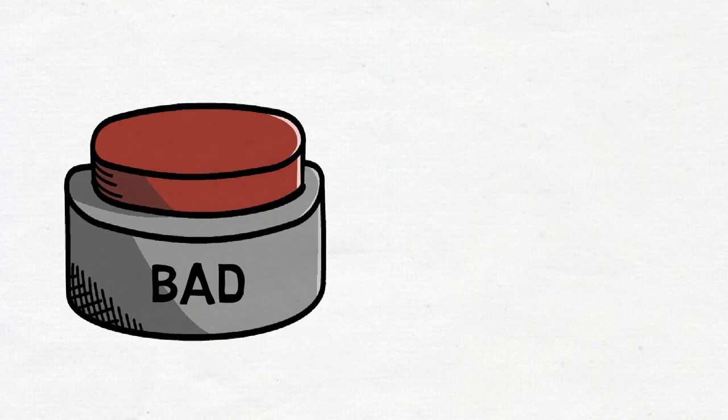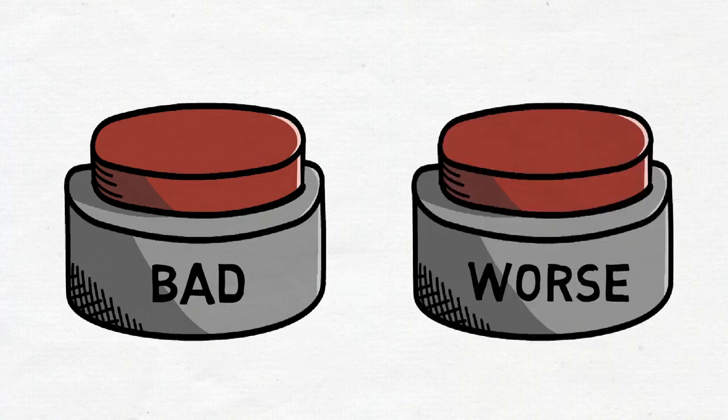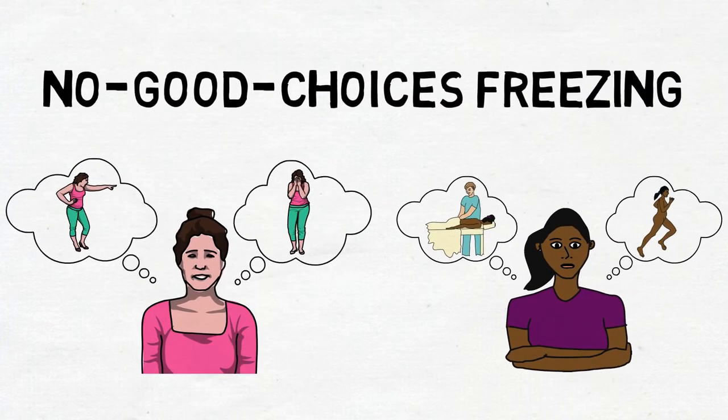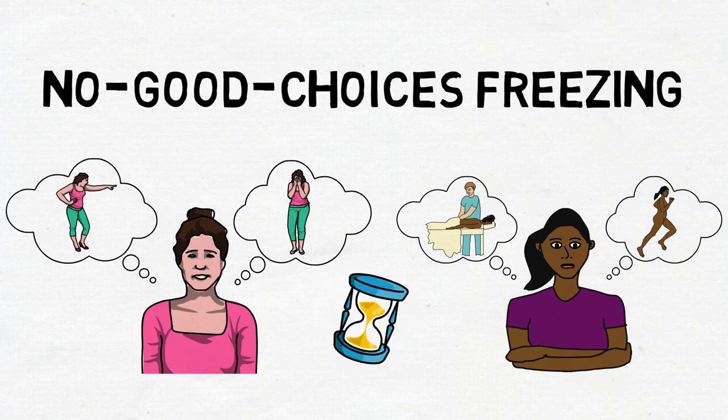During no good choices freezing, more rational and potentially effective thoughts and behaviors don't even arise as options in the brain or mind. Basically, right after detection or shocked freezing, thinking can be reduced to extreme lose-lose options, to choices that are no real choices at all. That's why it's called no good choices freezing, and people can get stuck there for seconds, even minutes.